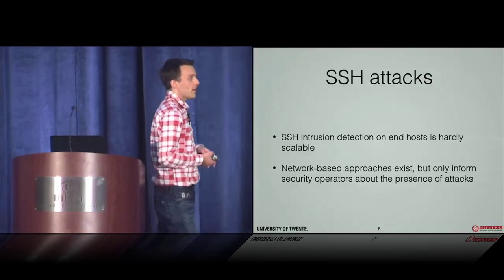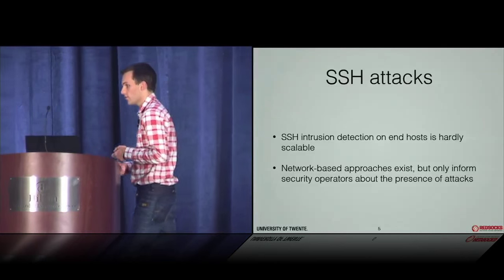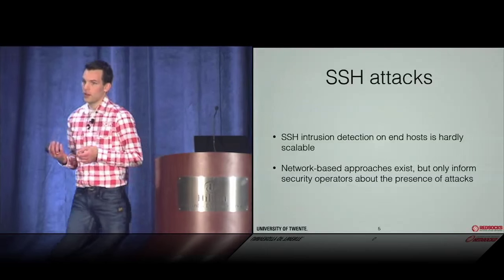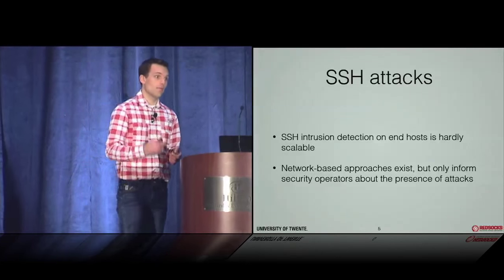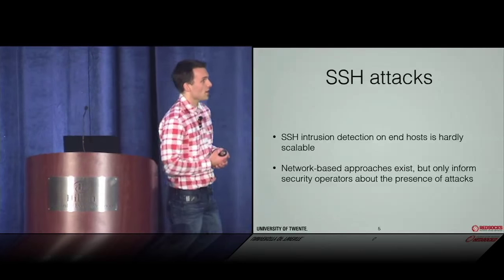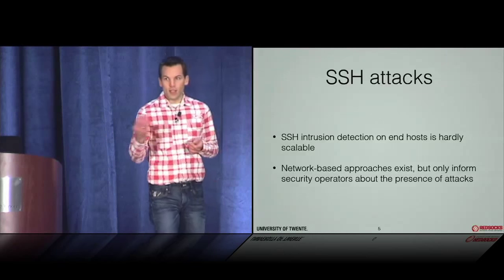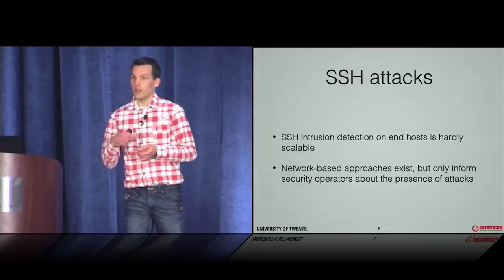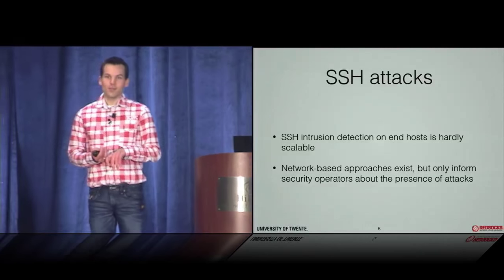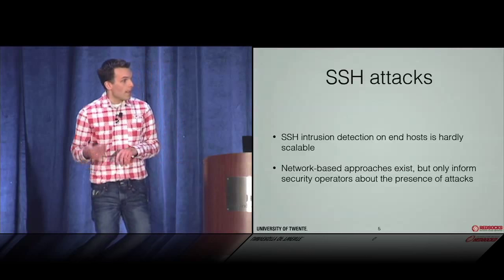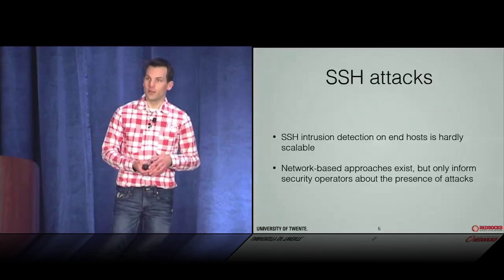If we want to detect these kinds of attacks, we can do it in a host-based fashion. If we install something like fail2ban or deny hosts on our machines, we are pretty safe — these tools inspect log files. If they see an attacker failing to log in three times, they put the IP address into iptables. This works pretty well in a home network, but in a campus network with 25,000 active machines, it's a tough job. Since we're at a network security conference, we focus on network-based approaches that we can deploy in the network.